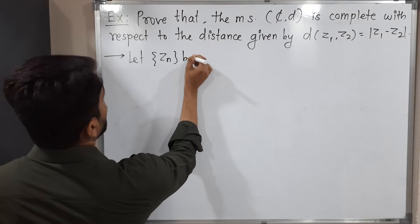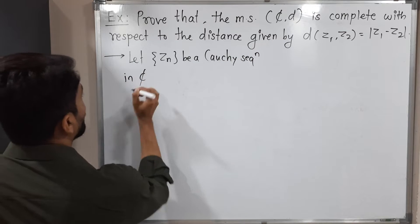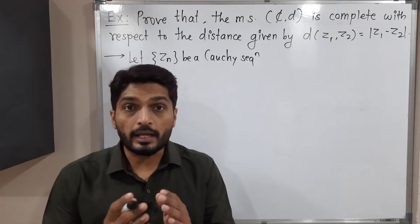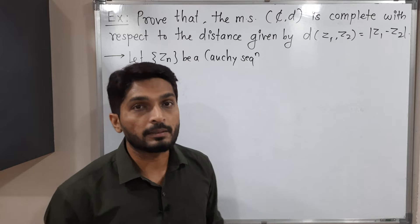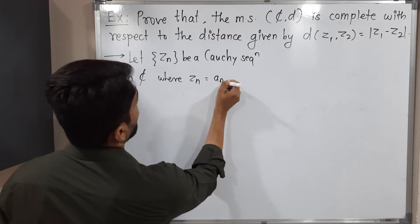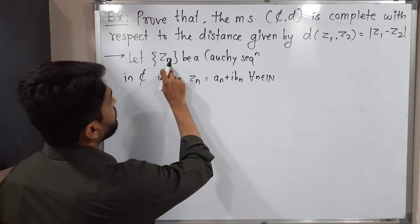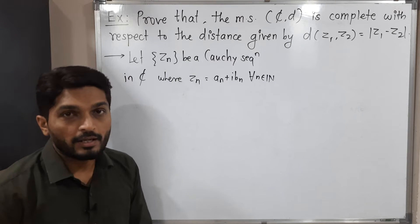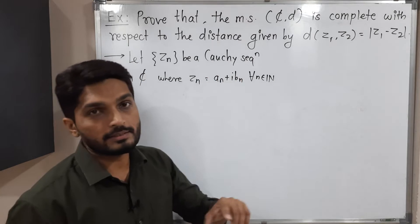Let {Zₙ} be a Cauchy sequence in ℂ. Each term is a complex number, and any complex number can be expressed as a plus i times b — real part plus i times imaginary part. So we write Zₙ = aₙ + ibₙ for all n, where aₙ and bₙ are real numbers: aₙ is the real part and bₙ is the imaginary part.